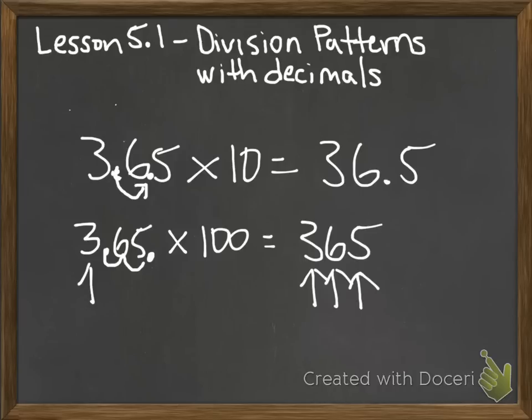Essentially, what we did was we created more places on the whole number side of the decimal. Here, there was only one place on the whole number side of the decimal, which was 3. We multiplied it by 100. That decimal moved over two places, and as you can see, now we have three whole numbers to create 365.